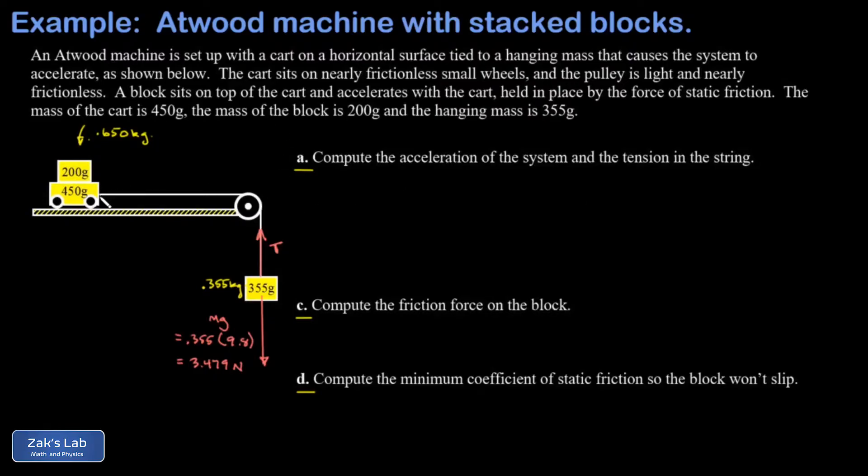And as usual, provided the pulley is light and frictionless, the tension will be the same everywhere in the string. So that cart with the block on top also feels a tension of T and that's pulling to the right. It's clear that the Atwood machine is going to accelerate in this direction where the hanging mass goes down and the cart goes to the right. And we're going to define that as the positive direction for the analysis of forces on each of these masses.